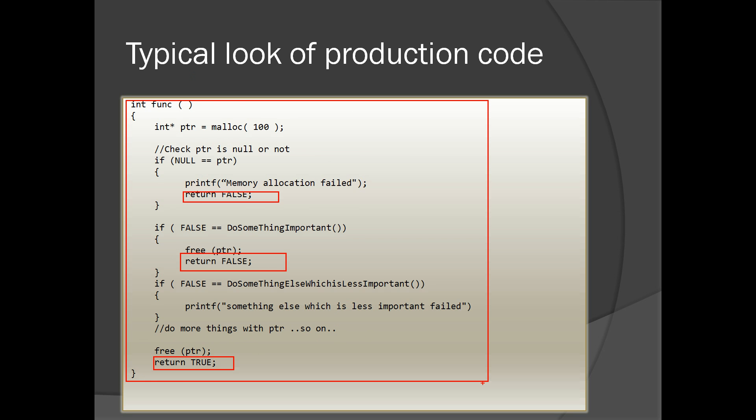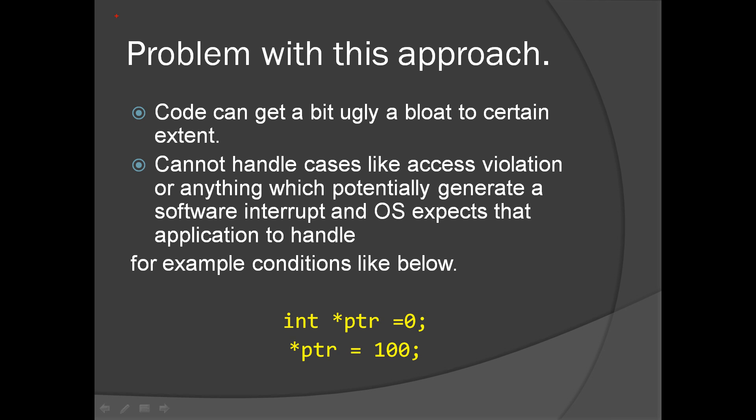This is a little bit of pseudo code. This is normally how production code looks in a fault tolerant way. There are a couple of issues with this approach, this validation. One is the code can get a little bit ugly and cause additional instructions due to all these checks. We are checking every time a function call is made and doing some action based on the return of the function. The number of instructions for the function can increase, which can lead to something called code bloat.